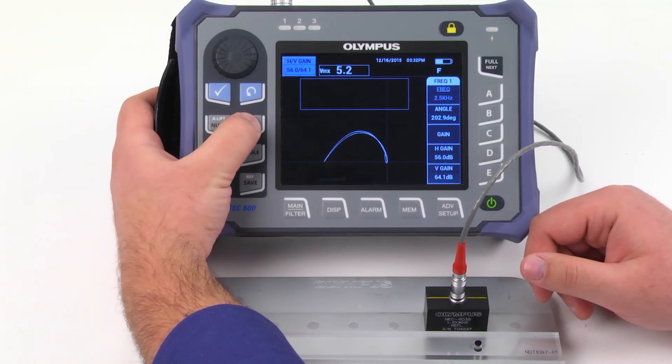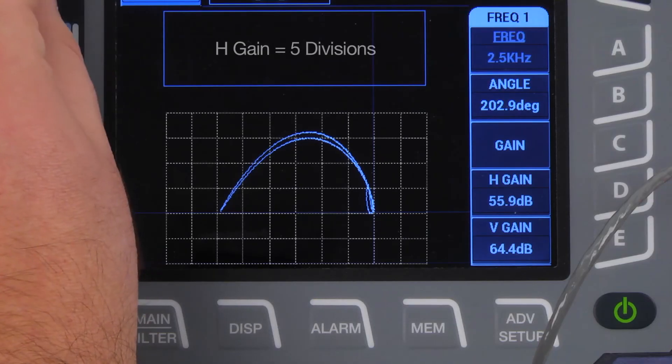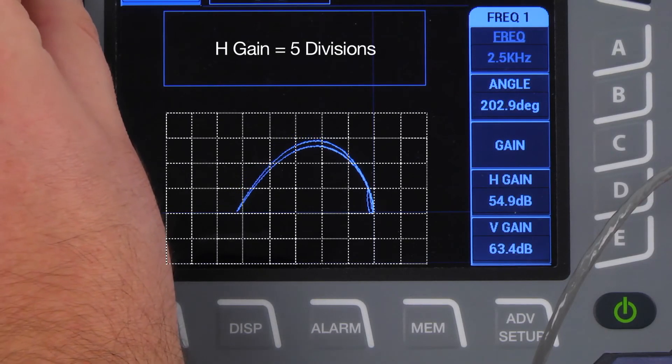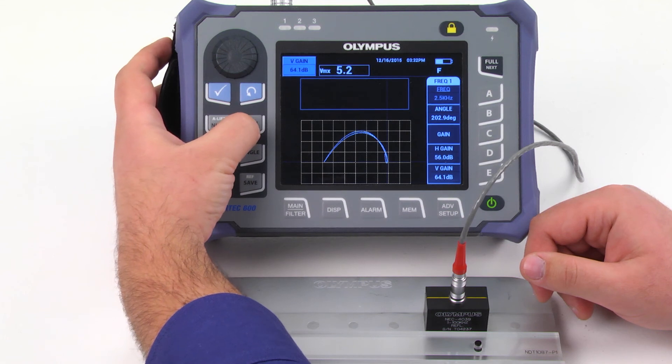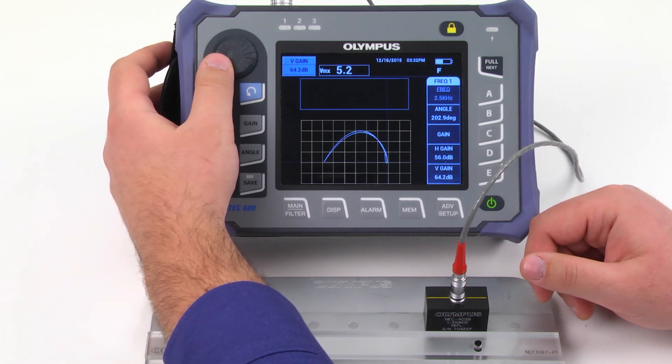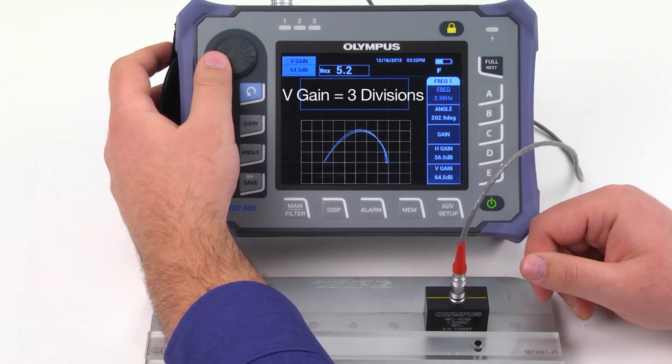Press Gain twice and use the knob to adjust the horizontal gain. The H-gain signal should cover 5 divisions. Press Gain again and use the knob to adjust the vertical gain. The V-gain signal should cover 3 divisions.